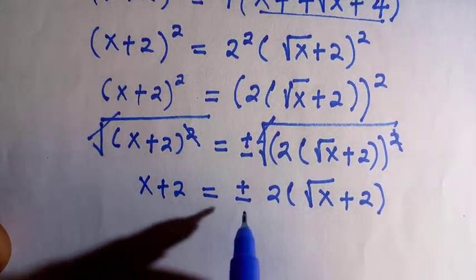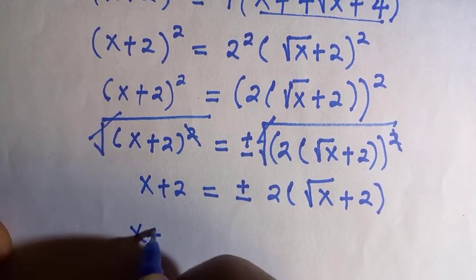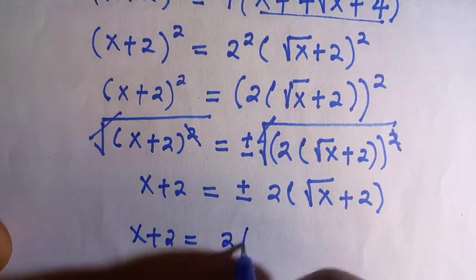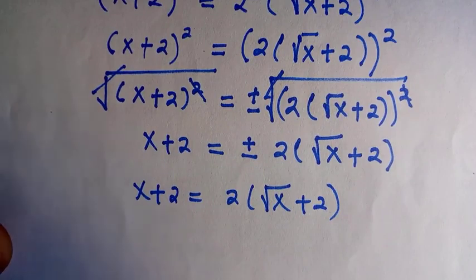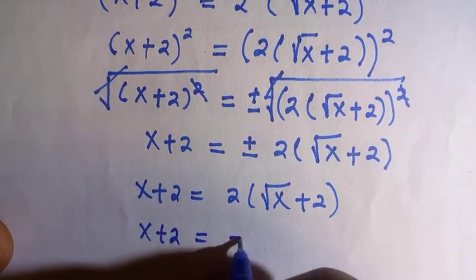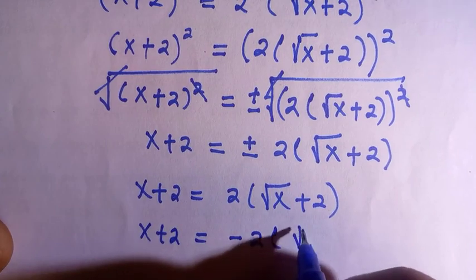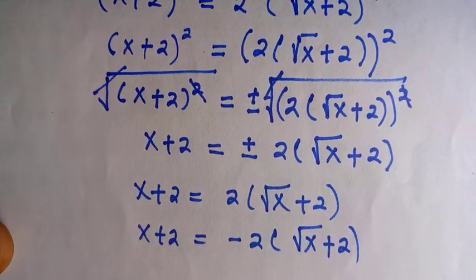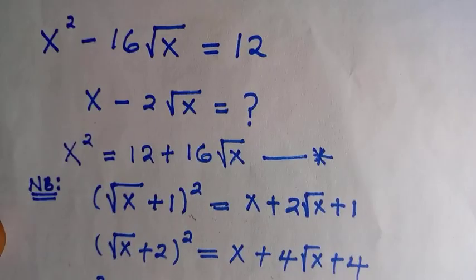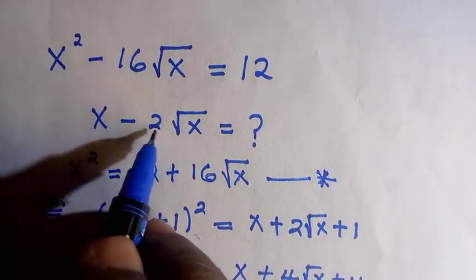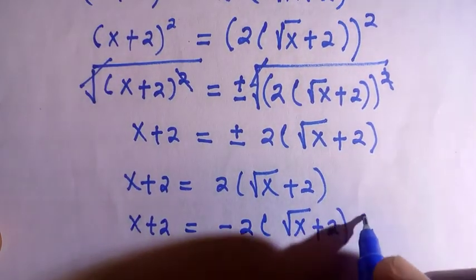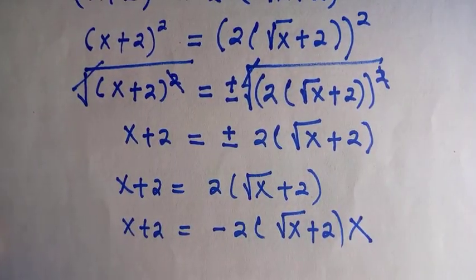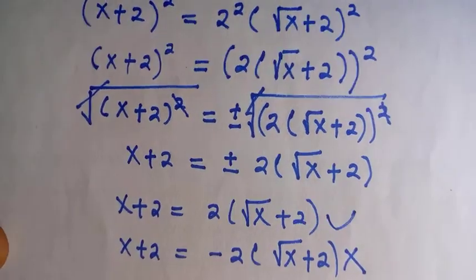At this stage, this can take either positive or negative. For the positive side, we have x + 2 equals 2(√x + 2), or we have x + 2 equals -2(√x + 2). We are asked to calculate x - 2√x. Looking at the second equation, which is negative, it will not be equal, so I don't need this. Let's try the first one.